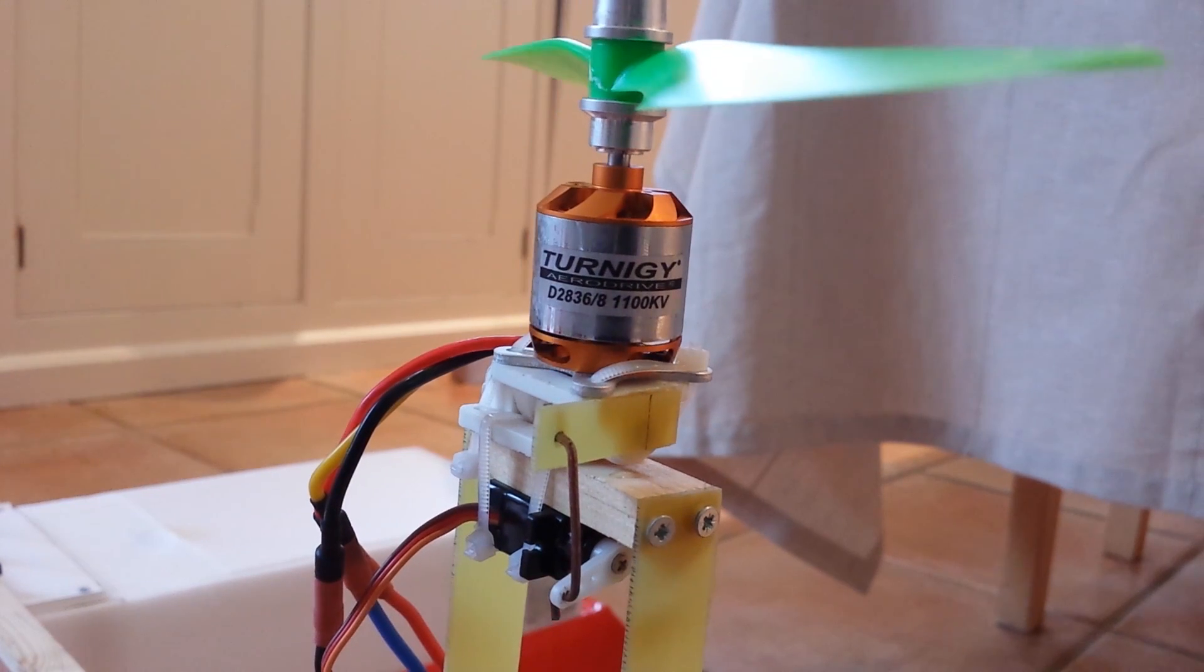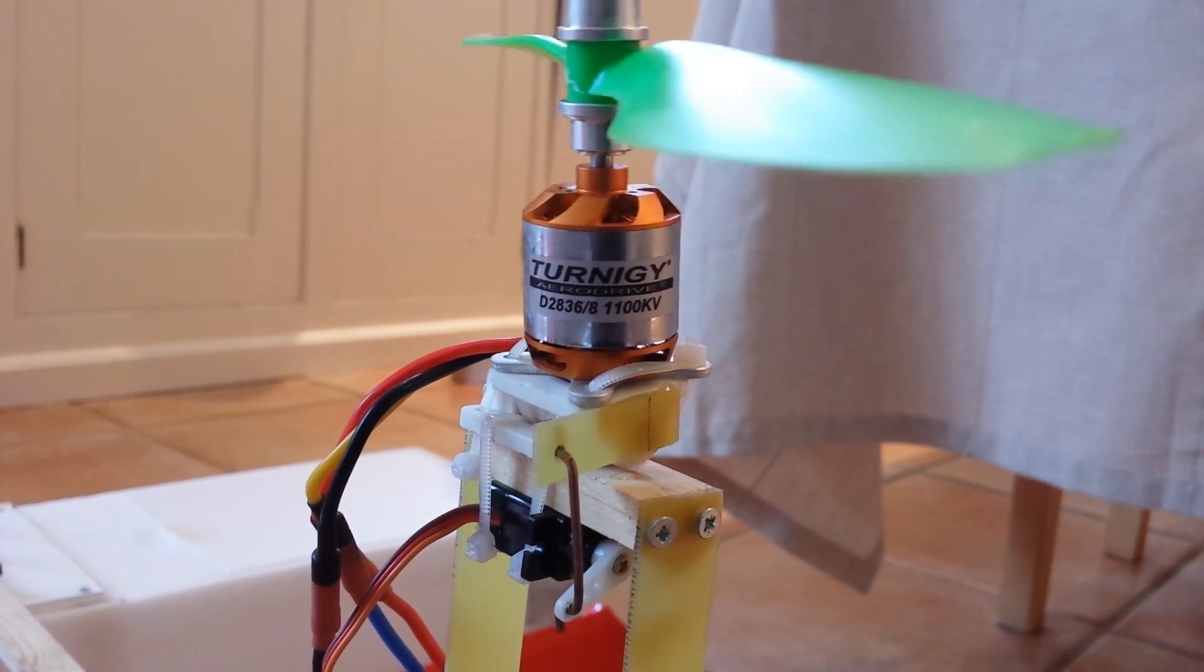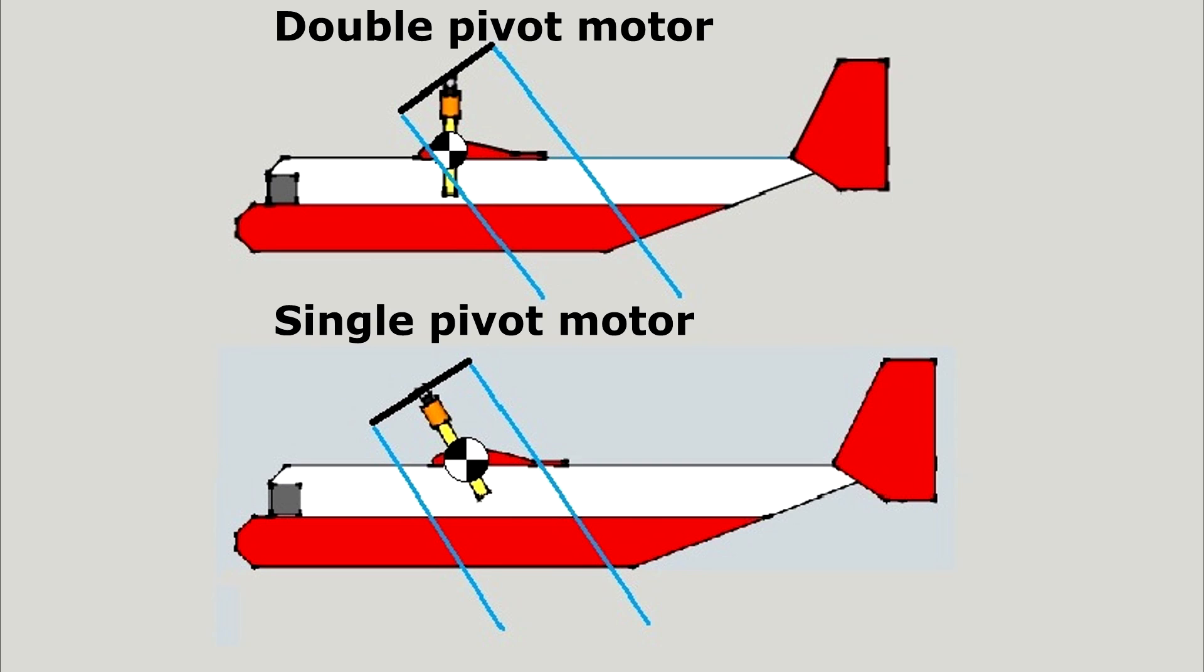The motors actually pivot individually to the motor pods. This creates a greater moment around the centre of gravity of the plane which should improve pitch stability and authority as shown in this picture.